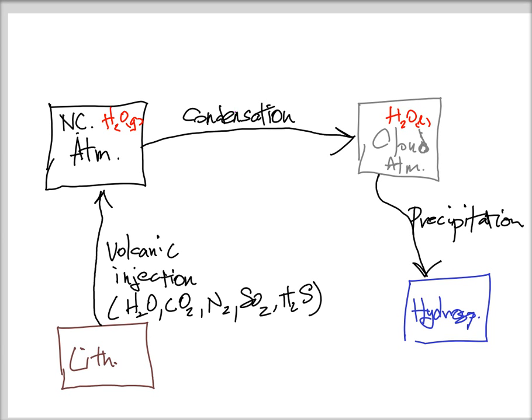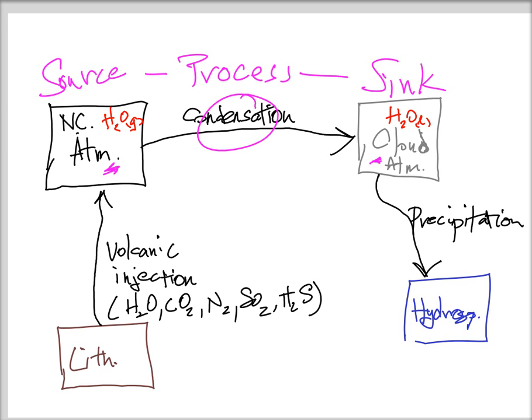Through the process of condensation, we can extract water vapor from the non-cloud atmosphere and transfer it over to the cloud component of the atmosphere. So in this kind of a scenario, the non-cloud component of the atmosphere is the source, the cloud component of the atmosphere is the sink, and condensation is the process. So we have a source, process, sink, triple that we can consider here.